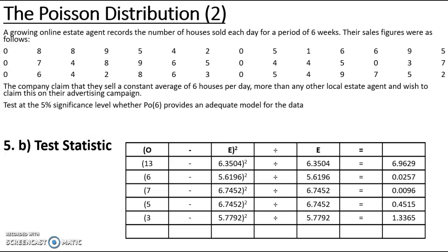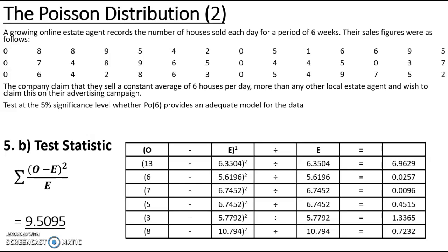For the last category, eight or over, combining the eights and nines gives a total observed value of 8 with an expected of just under 11, again a small contribution. Adding up all those contributions, the test statistic is 9.5095.